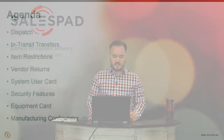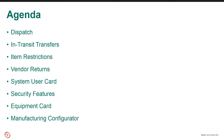Some of the new features we're going to be looking at will be the dispatch module — we'll talk quite a bit about that. We'll also look at in-transit transfers and the functionality you can now perform within the SalesPad desktop environment. We're going to look at item restrictions, vendor returns, the system user card that we've added to SalesPad, security feature functionality to make finding security protocols very simple, and then learning more about those protocols through our knowledge base documentation online. We're also going to look at the equipment card, and finally the manufacturing configurator, which will allow you to configure products on the fly, build a bill of materials, associate that with the routing, and then create a manufacturing order to build that product.